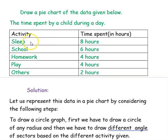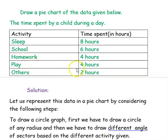The activities done by the child during the whole day are given: sleep — 8 hours, school work — 6 hours, homework — 4 hours, time spent playing — 4 hours, and others — 2 hours. This is in a day, so if you add all these, we will get 24 hours.